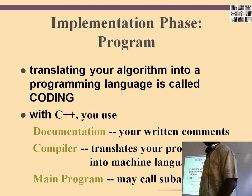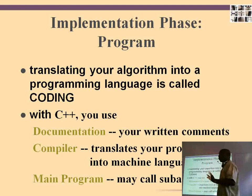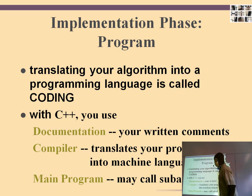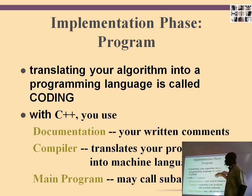We've talked about the analysis phase of the programming life cycle. Now let's talk about the implementation phase. Implementing our algorithm is a process of translating it from pseudocode, structure charts, and flowcharts into a written coding language — in this case, C++ this semester. Key terms include documentation and written comments, compilers that translate source code into machine language, and the main program that calls all of our algorithms.